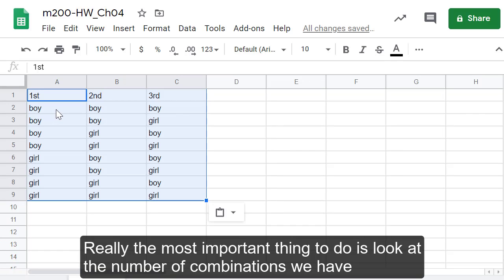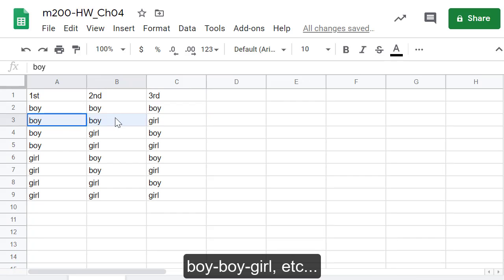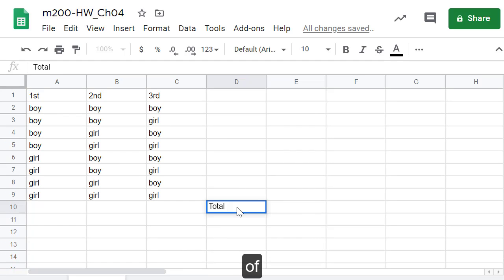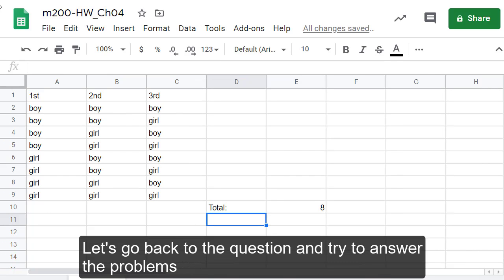Really the most important thing to do is look at the number of combinations we have. So the combination for boy-boy-boy is one combination, boy-boy-girl, etc. So there is a total of eight combinations. So there's eight possibilities to choose from. Let's go back to the question and try to answer the problems.